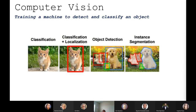When we talk about computer vision, we're talking about training a machine to detect and classify an object. There are many different instances of computer vision, and this is a nice little diagram that kind of summarizes them all.